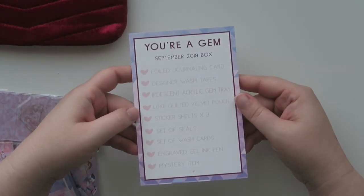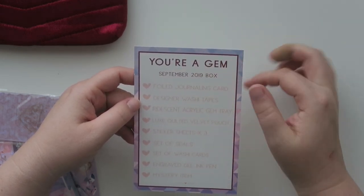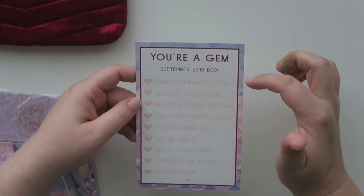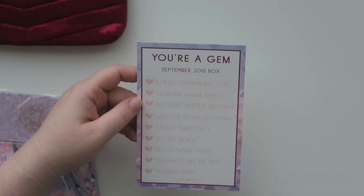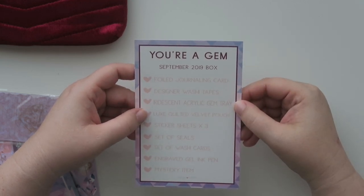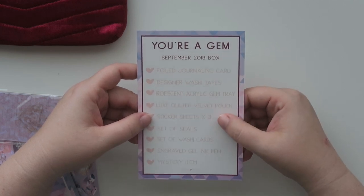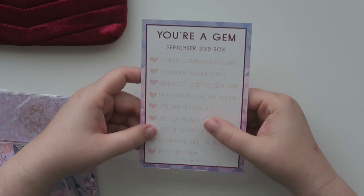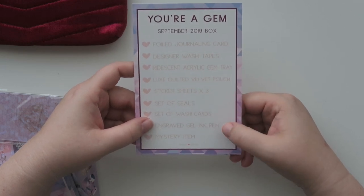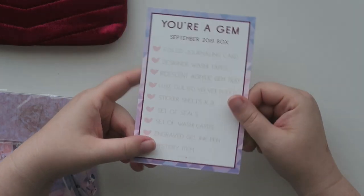All right, so let me grab the card first because it tells you what's all in the box. It's Your Gem September 2019 box. There's foiled journaling card, designer washi tapes, iridescent acrylic gem tray, luxe quilted velvet pouch. There's three sticker sheets, a set of seals, a set of washi cards, an engraved gel ink pen, and then a mystery item. So let's start going through it.